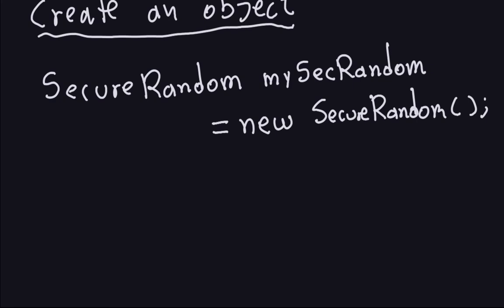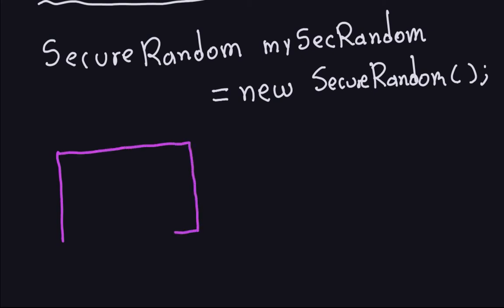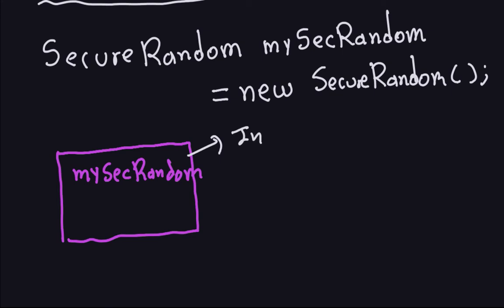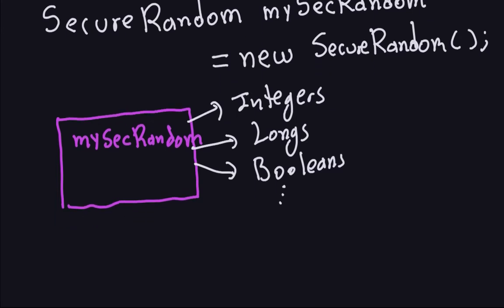So my object 'mySecureRandom' is not generating anything yet because I'm not asking it to do anything. But it's going to create exactly the same things that Random can create — it can create integers, longs, and booleans, cryptographically secure. Nothing changes here. The only difference is that instead of being Random, it's a SecureRandom — a cryptographically secure random generator.